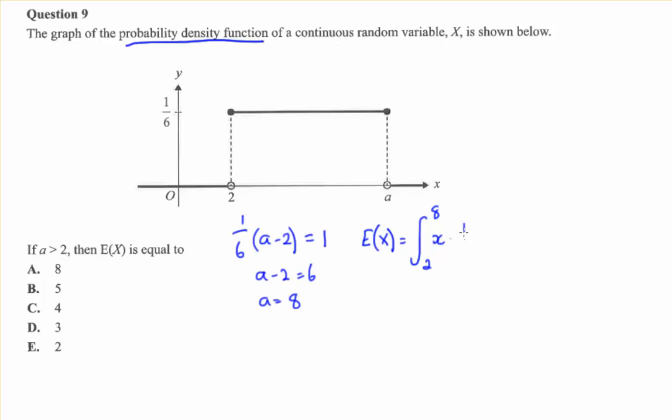So it's x times 1 sixth dx. That's going to give us our mean value. Let's add 1 to the power and divide by the new power. We get x squared on 12 and we're going from 8 to 2. 8 squared is 64. 64 on 12 minus 4 on 12 equals 60 on 12 which simplifies to 5 which is our expectation. So we can see that the answer is B.